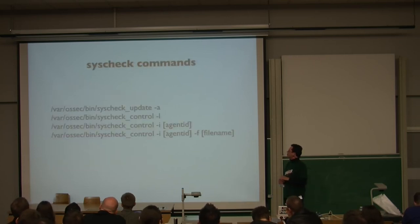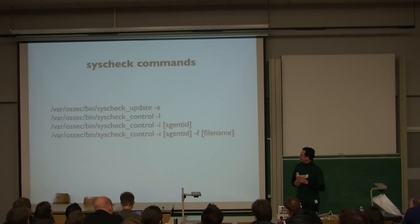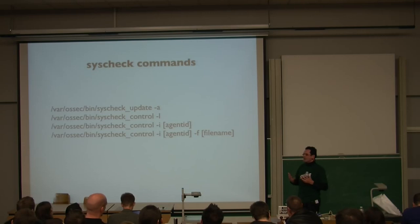There's a lot of commands that you can use on the server to check the integrity. The syscheck update is just updating the database. That's done automatically, but every few hours. If you want to have the situation updated now, you can use that command. With the syscheck control minus L, you're going to get a list of the agents. Minus I is just going to give you from a certain client all the files that have changed. After a short while, it will already be a very long list. If you're looking for a specific file, you can use that last command.